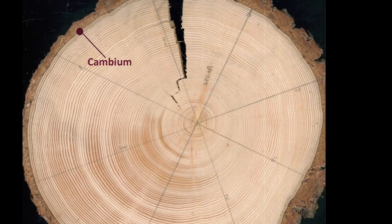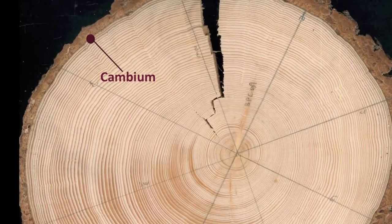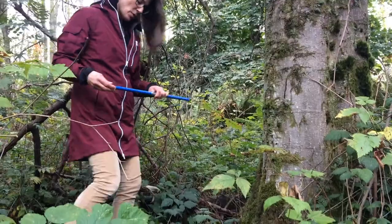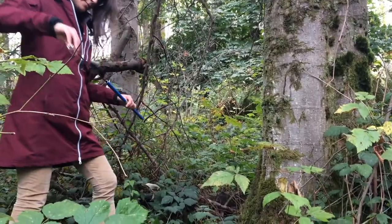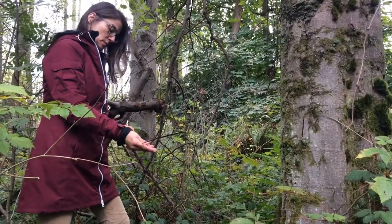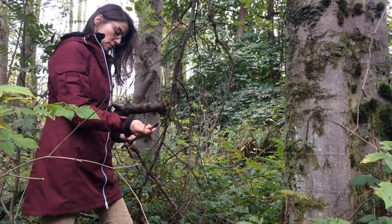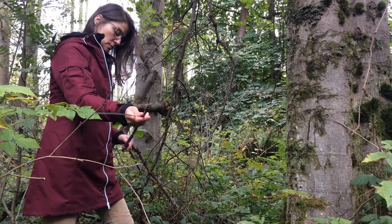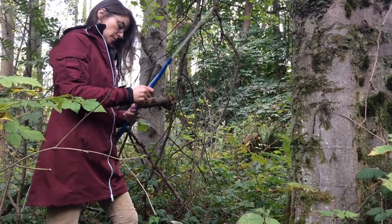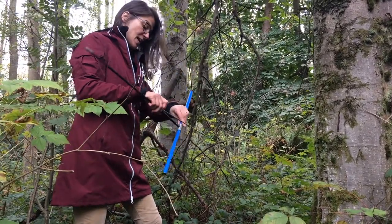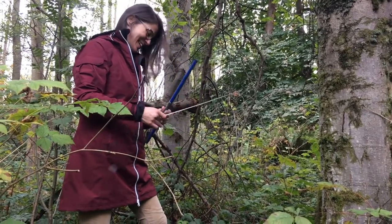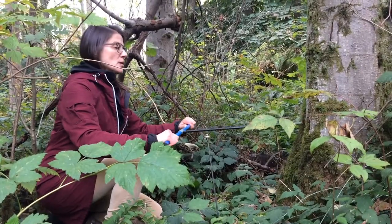Each ring is laid down just under the bark in a region called the cambium. We identified a suitable stem to core — one of the larger stems within this relatively even-aged post-disturbance cohort of alder — to ensure that we have an individual that established immediately post-disturbance.